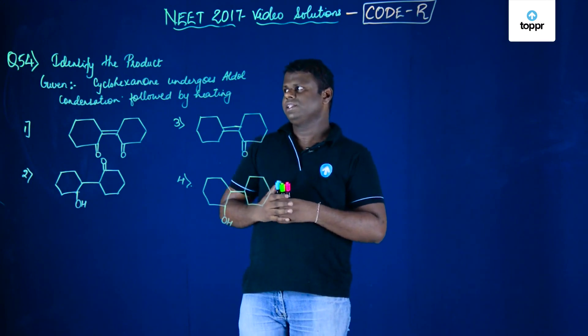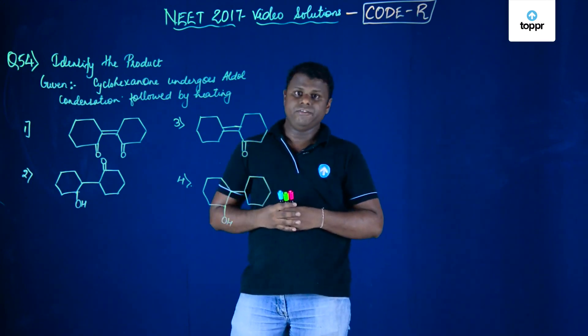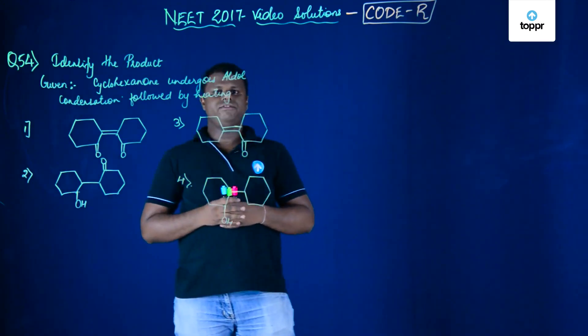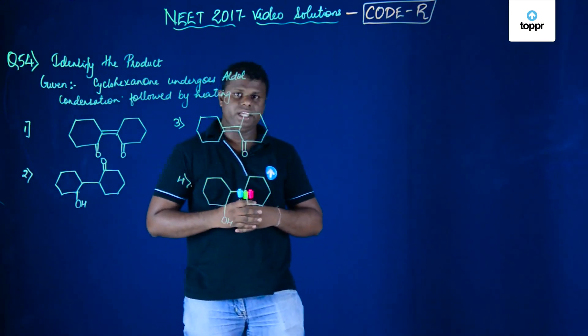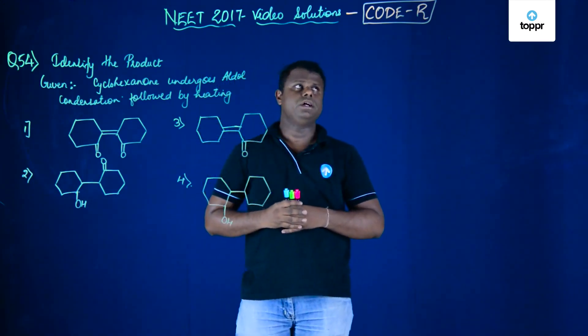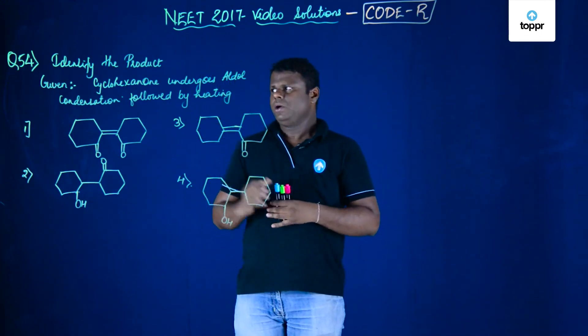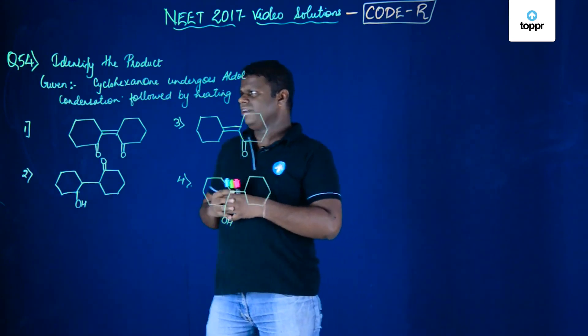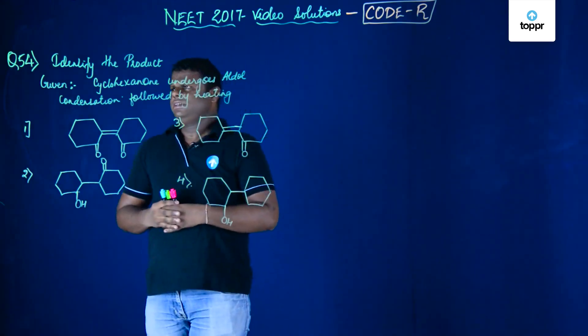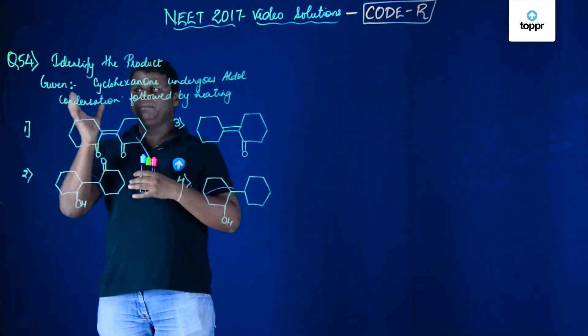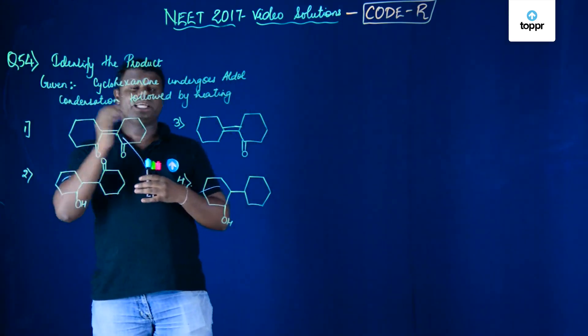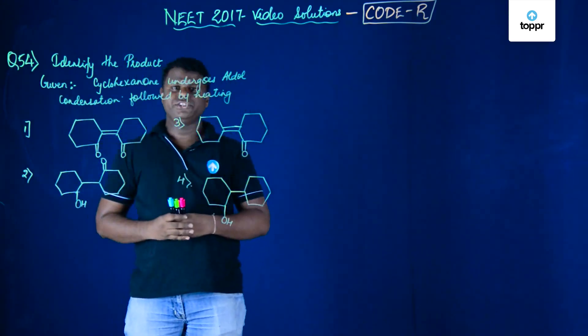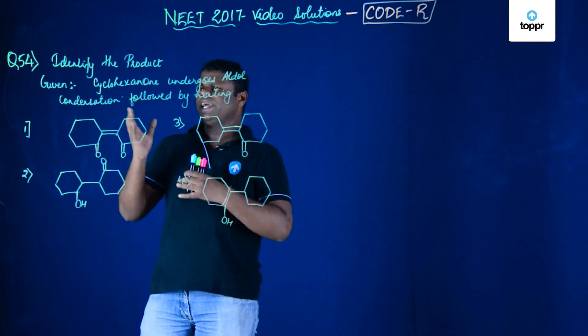Now we are going to discuss question number 54 of NEET 2017 paper code R. It's given that we need to identify the product, and there's an aldol condensation going on.